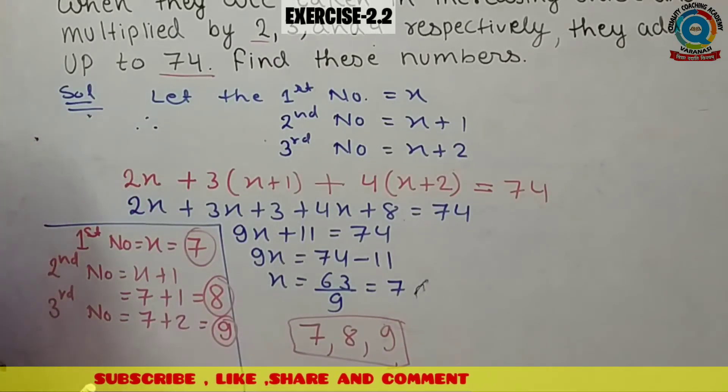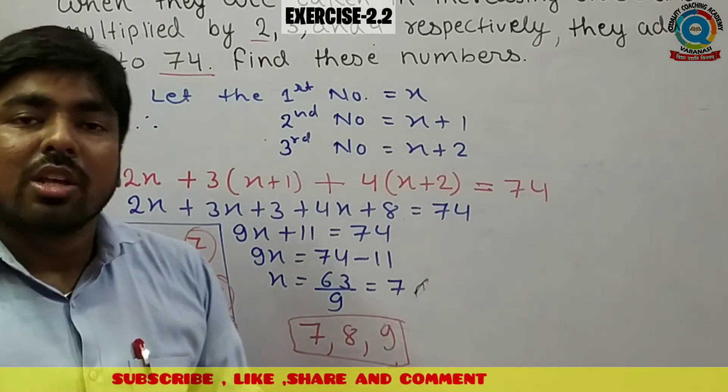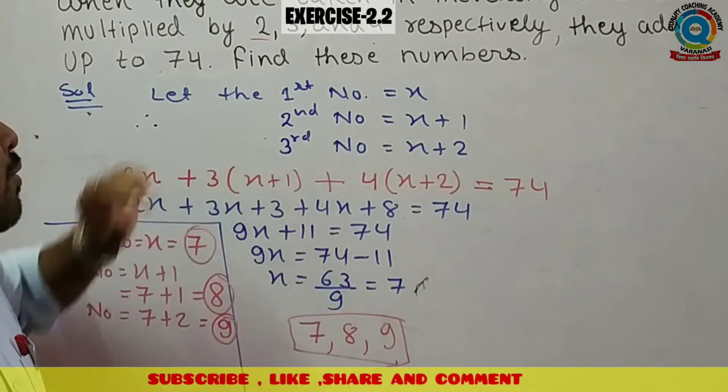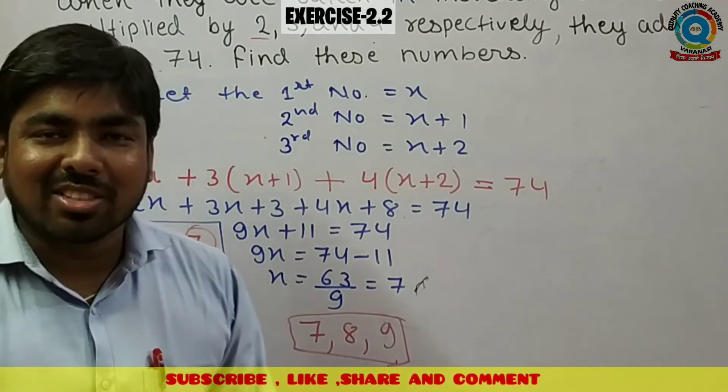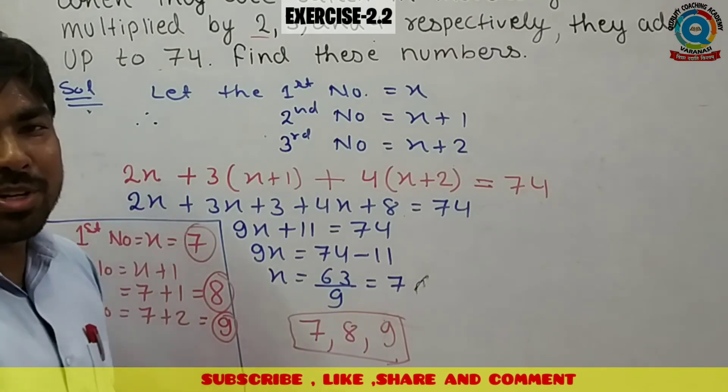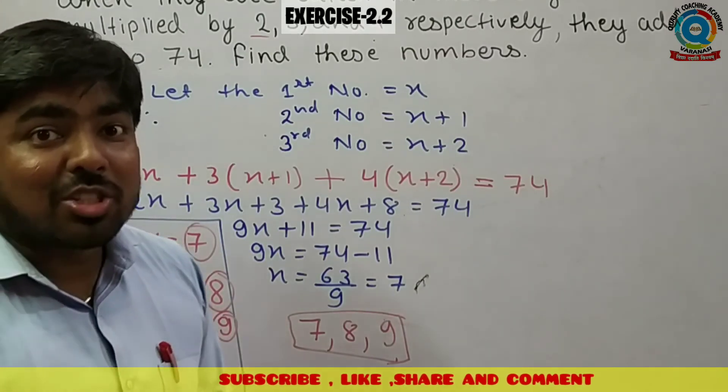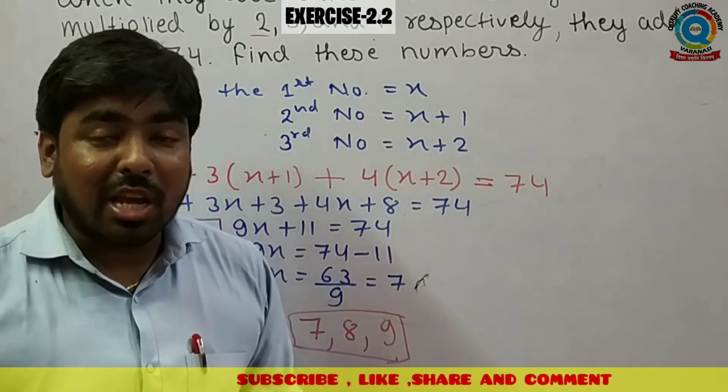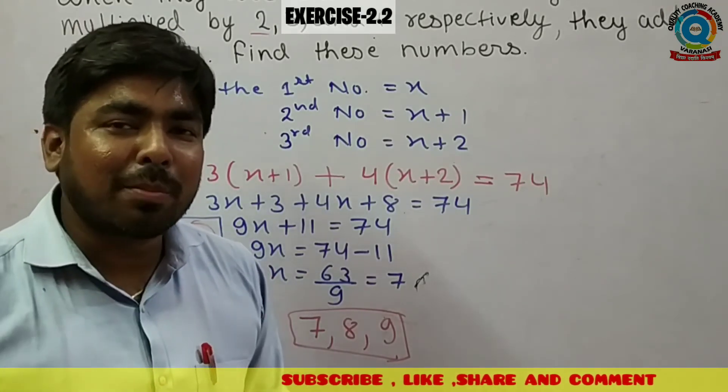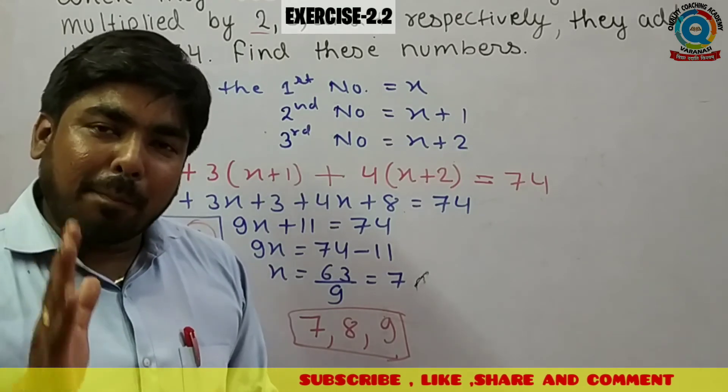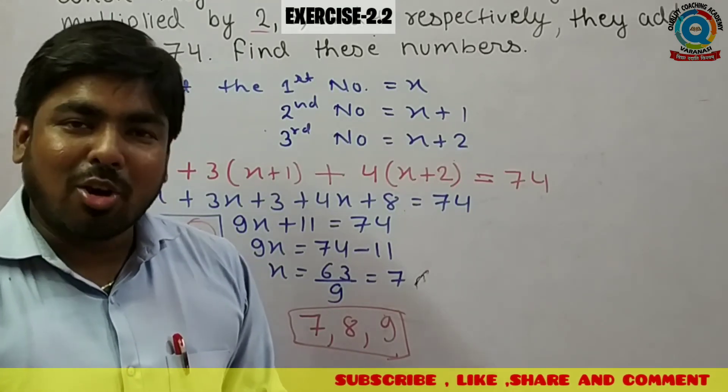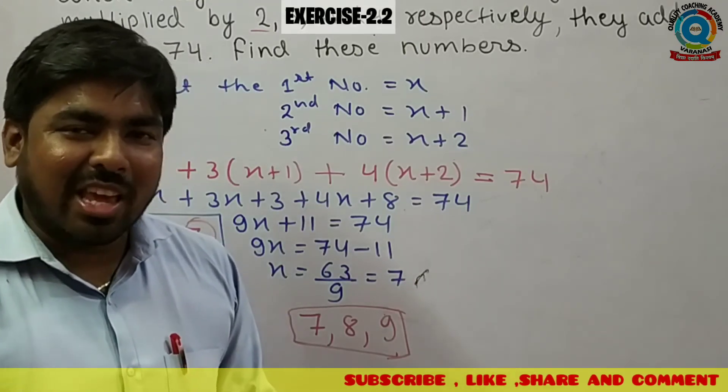Yehi wo 3 number hai, consecutive integers number jis ko agala me multiply kata ho 2 se, 3 se, 4 se, or add kata ho to 74 ata hai. Isi tariqe se is question ko solve karta hai. Agar samaj me a gya ho, toh like button press kar do. Agar channel subscribe nahi kiya, toh channel subscribe kar lo, bell icon ko press kar lo. Agar samajh me aa raha hai to apna feedback comment box me drop kariyega. Thank you so much.